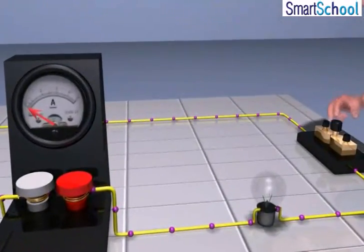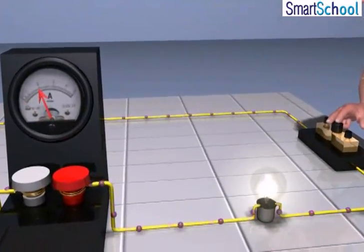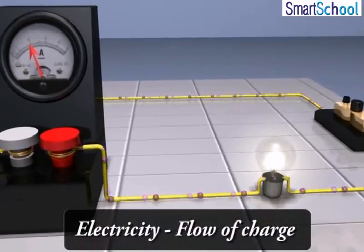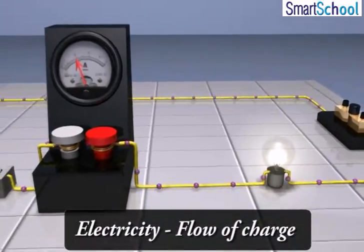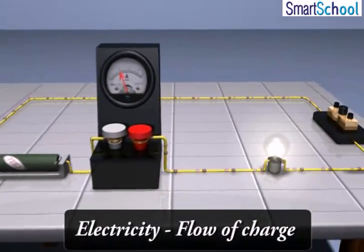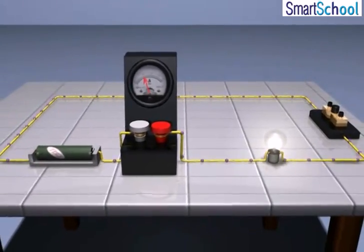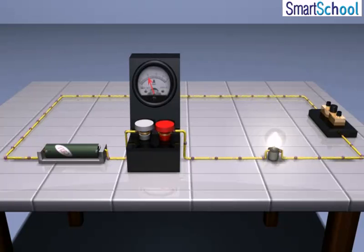But what constitutes electricity? It is the flow of charge through a conductor, and the electric current is expressed by the amount of charge flowing through a particular area in unit time.